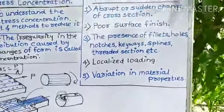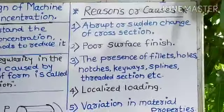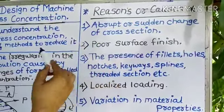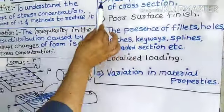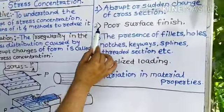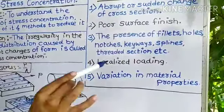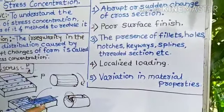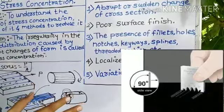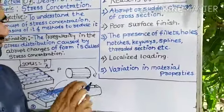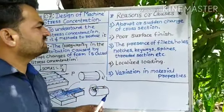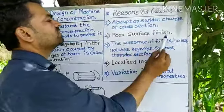There are some reasons behind stress concentration. The first reason is abrupt or sudden change of cross-section, as understood from the explanation. The second reason is poor surface finish — while finishing any surface, there may be scratches or irregular surfaces on a machined surface, and these may cause stress concentration. Poor surface finish is one of the reasons.